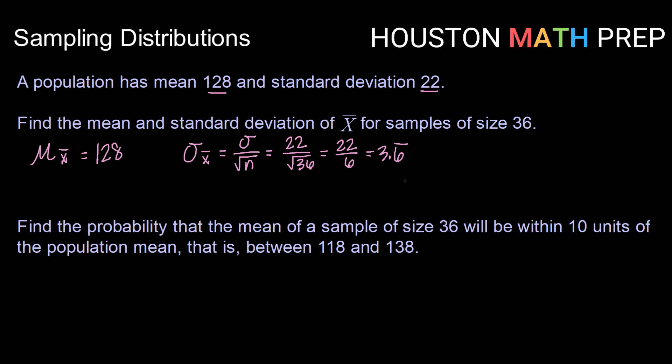Now using that information, find the probability that the mean of the samples of size 36 will be within 10 units of the population mean. That is, find the probability that the mean of the samples will be between 118 and 138. Because we have samples of greater than size 30, because n equals 36 is greater than or equal to 30, the central limit theorem tells us that we're going to be working with an approximately normal distribution.